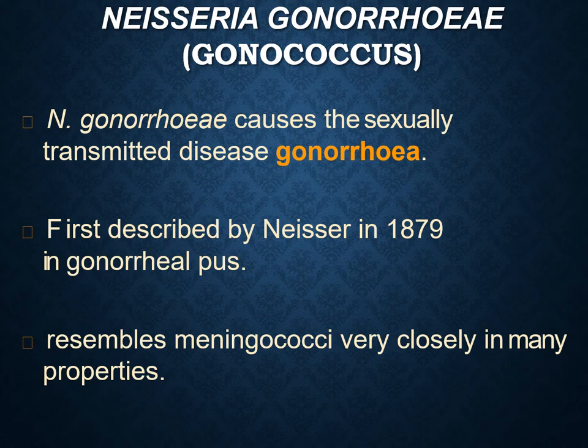Neisseria gonorrhoeae is responsible for the sexually transmitted disease gonorrhea. Gonorrhea is also known as 'the clap.' It is a sexually transmitted infection caused by the bacterium, and the infection may involve the genital organs of both male and female, mouth, and also the rectum. This organism resembles Neisseria meningitidis very closely in many properties. The infection may present with a broad range of symptoms and it can affect the urogenital, anorectal, pharyngeal, and conjunctival areas.